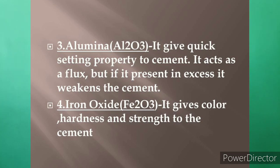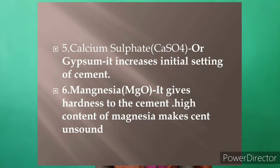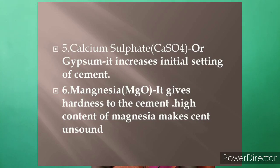Calcium sulfate (CaSO₄), also known as gypsum, increases the initial setting time of cement. Magnesia (magnesium oxide) gives hardness to cement, but a high content of magnesia makes cement unsound.